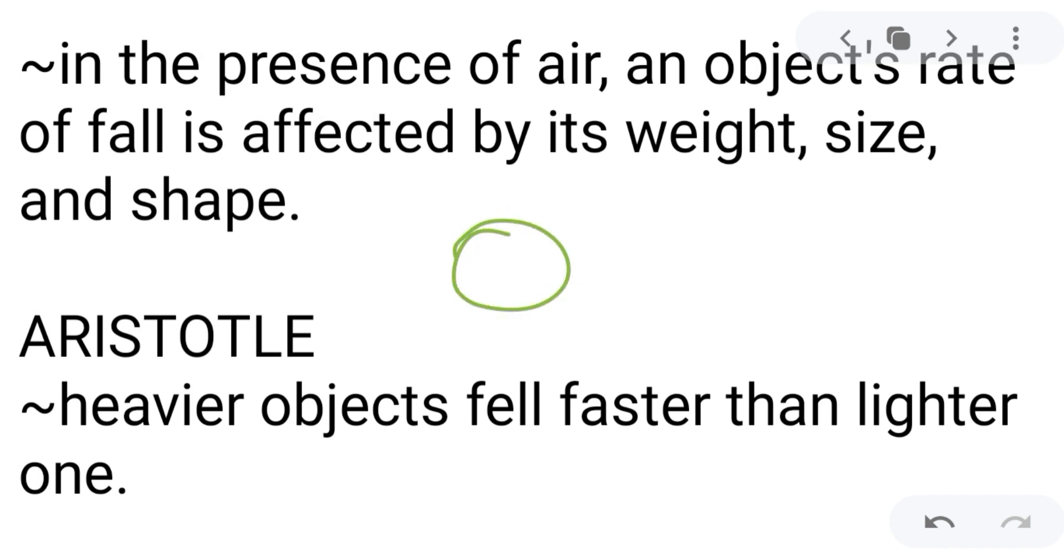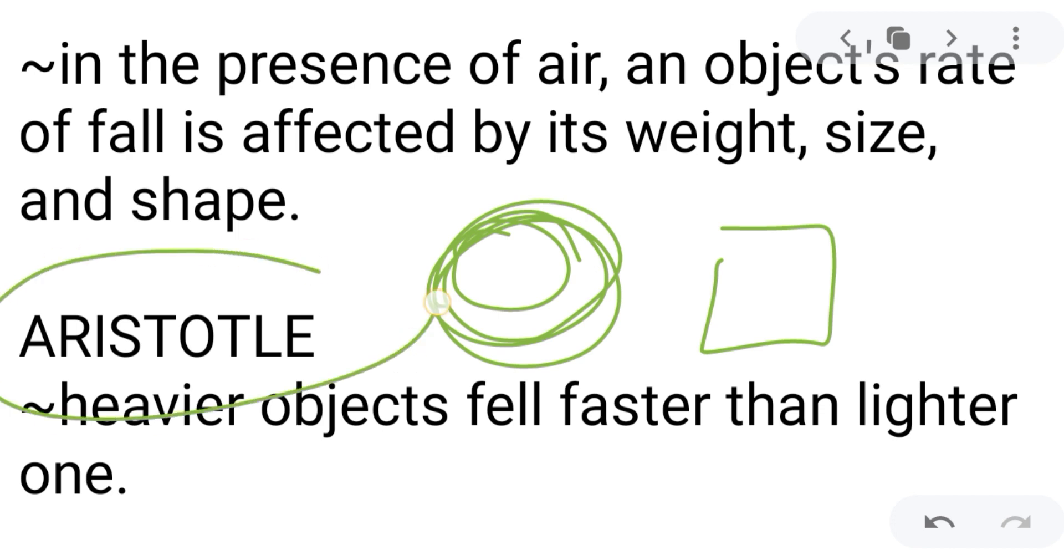For example, kung mayroon kang bato, tapos mayroon kang paper, crumpled paper for example, the rock will fell first because it is heavier compared to the paper. So in this case, we have here now the Aristotle thought in which the heavier objects fell faster than lighter ones. And then this is the thought of Aristotle.